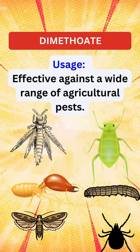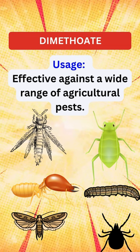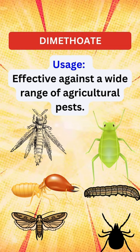Dimethoate is recommended for a variety of crops, including alfalfa, citrus, corn, cotton, pecans, potatoes, and soybeans.